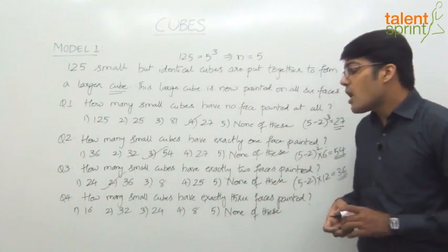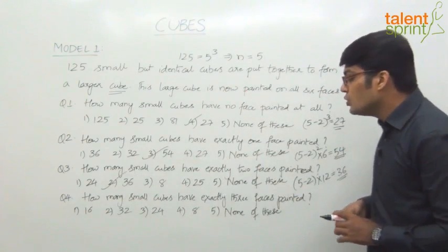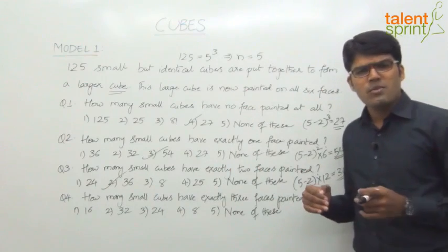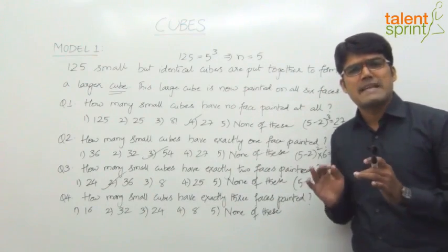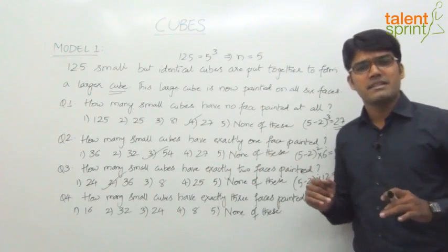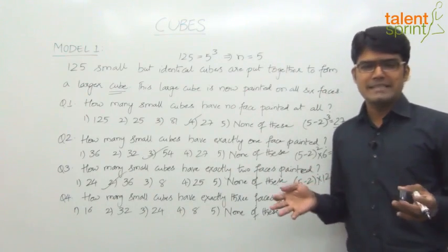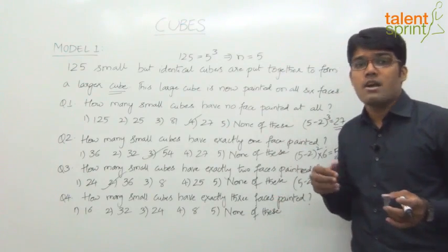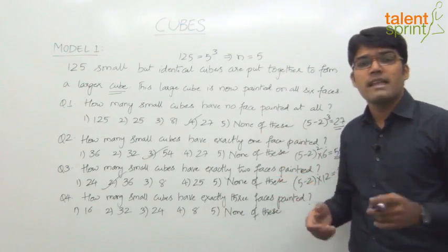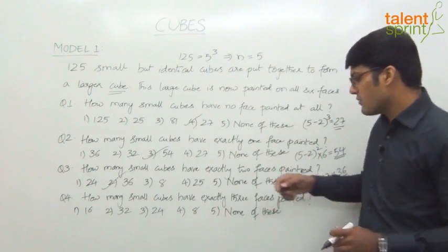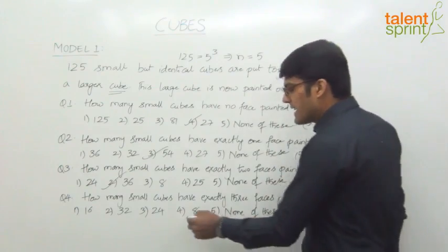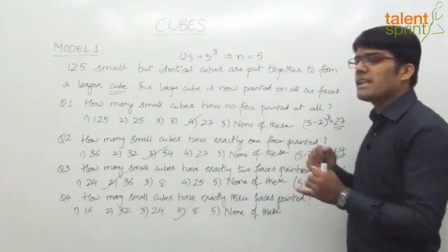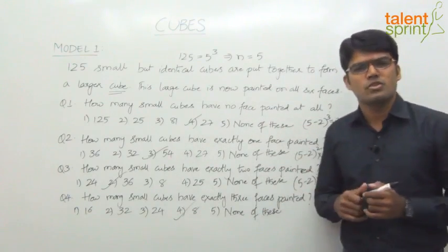How many small cubes have exactly three faces painted? Cubes with three faces painted exist at the corners of the larger cube. A cube has 8 corners, so the direct answer is option 4: 8.